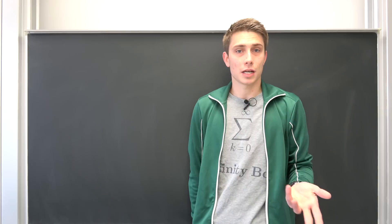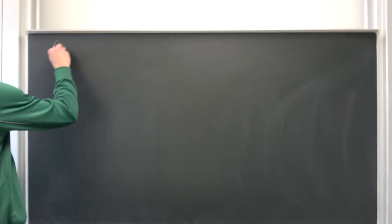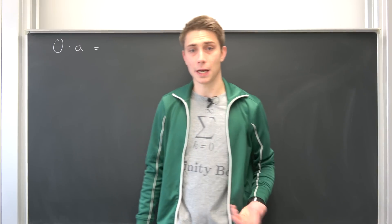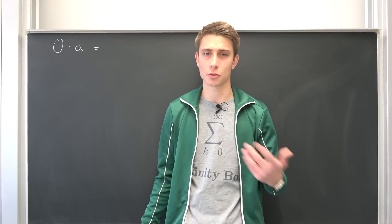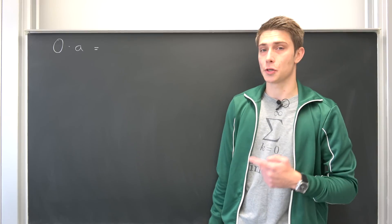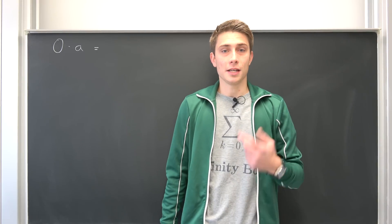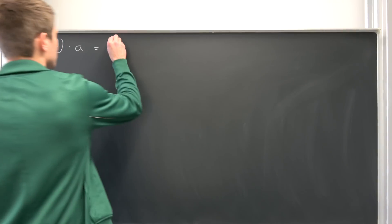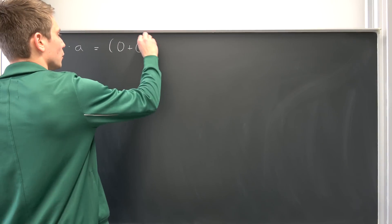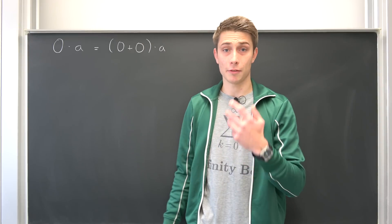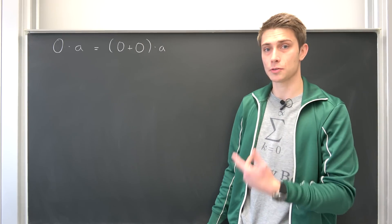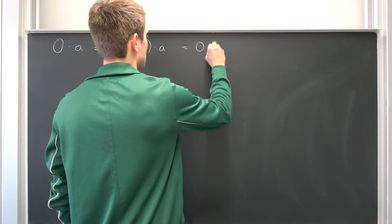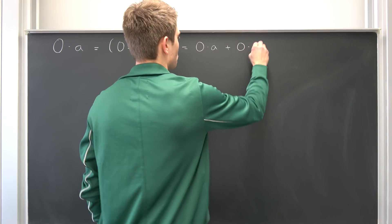So zero times anything is going to be zero. Why not start off with zero times A? We have already introduced the Peano axioms and the corresponding addition and multiplication. So what is zero exactly? Well, something plus zero is going to result in that something itself. So zero times A is nothing but zero plus zero, times A. But we have the distributive laws, so let's use distributivity to distribute the A into everything. So we have zero times A plus zero times A.